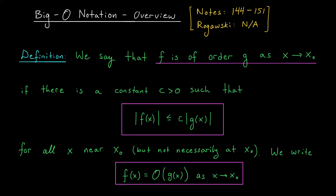So what is big O notation? It all starts with two functions, F and G. We'll say that F is of order G as X approaches some point X-naught if we can find a single positive constant C such that the absolute value of F of X is less than or equal to C times the absolute value of G of X. This should hold for all points X near X-naught, but not necessarily at X-naught itself. Sometimes these functions won't even be defined at X-naught, so we just need this result to hold nearby.